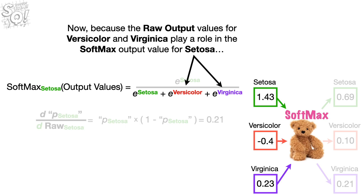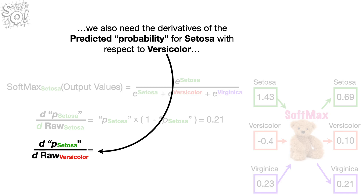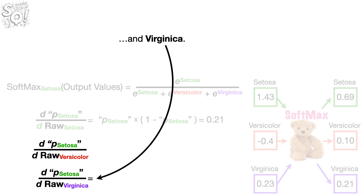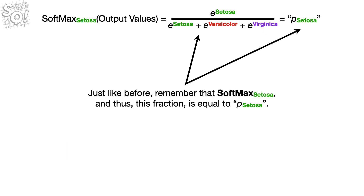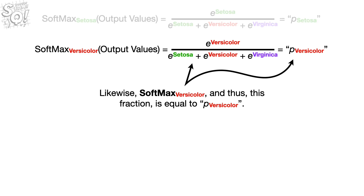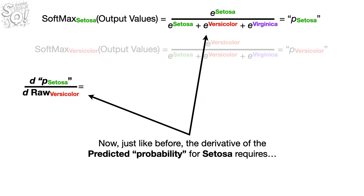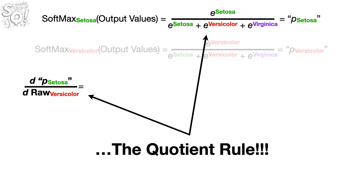Now, because the raw output values for Versicolor and Virginica play a role in the softmax output value for Setosa, we also need the derivatives of the predicted probability for Setosa with respect to Versicolor and Virginica. Let's quickly look at how to calculate the derivative with respect to Versicolor, and we'll leave Virginica for homework. Just like before, remember that the softmax value for Setosa, and thus this fraction, is equal to the predicted probability for Setosa. Likewise, the softmax value for Versicolor, and thus this fraction, is equal to the predicted probability for Versicolor. The derivative of the predicted probability for Setosa requires the Quotient Rule.